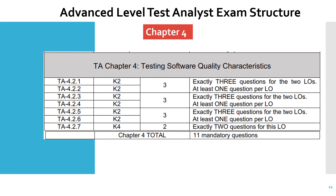Chapter four is another important chapter which has 11 mandatory questions in the exam, talking about testing software quality characteristics. The table shows exactly how many questions come from each section.